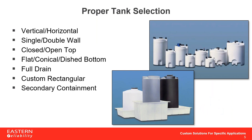Tanks are available in many shapes and sizes — from vertical to horizontal, single and double wall, closed and open top, flat or conical bottom. Full drain outlet tanks are available as well, along with custom rectangular and secondary containment tanks that vary in size and shape, whether circular or rectangular.